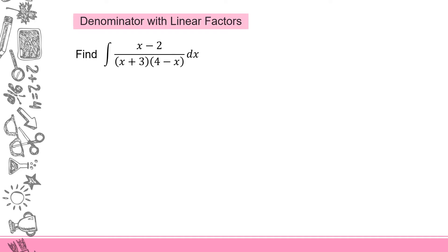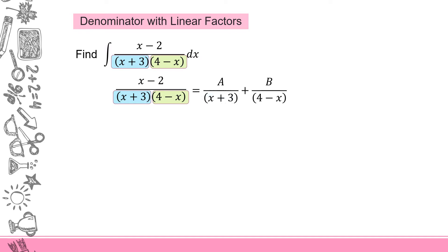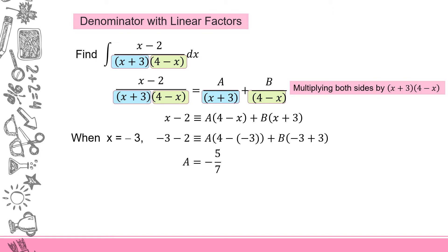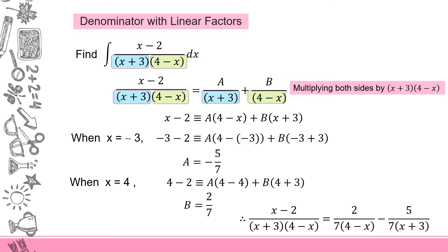Let's look at the first example, where the rational function has a denominator with two linear factors: x plus 3 and 4 minus x. To express in partial fractions, for each linear factor there is a corresponding partial fraction of the form A over x plus 3 plus B over 4 minus x. Multiplying both sides by the expression, we substitute x equals negative 3 to find A, and x equals 4 to find B. Thus, the partial fractions are 2 over 7 times (4 minus x) minus 5 over 7 times (x plus 3).